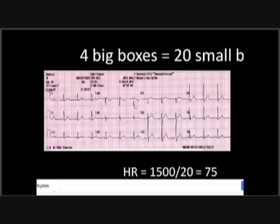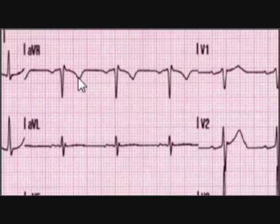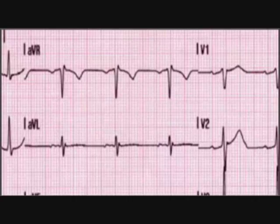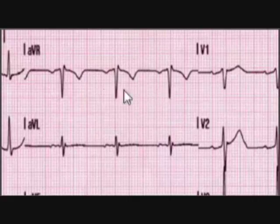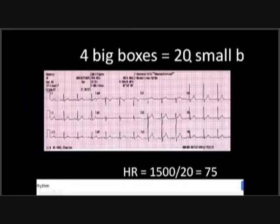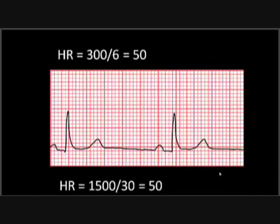In the first example, we calculate heart rate using the 1500 small squares method. The ECG machine shows a rate of 77 beats. After zooming in, we identify the P wave and R wave — the RR interval gives ventricular rate. Counting between two R waves gives four big boxes, which equals 20 small boxes. Dividing 1500 by 20 gives 75 beats per minute, which is close to the machine's reading.